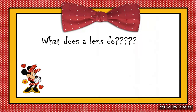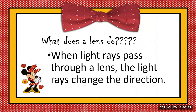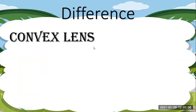Now, why do we use a lens and what does a lens do? When light rays pass through a lens, the light rays change direction. Light always travels in a straight line and cannot bend by itself, but when we use a lens it changes the direction of the light. Without a lens, light will keep traveling in a straight line.